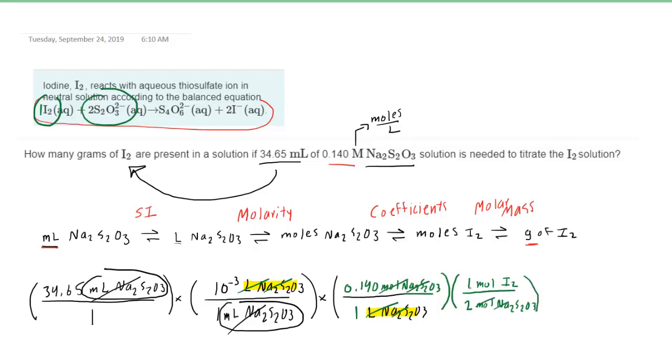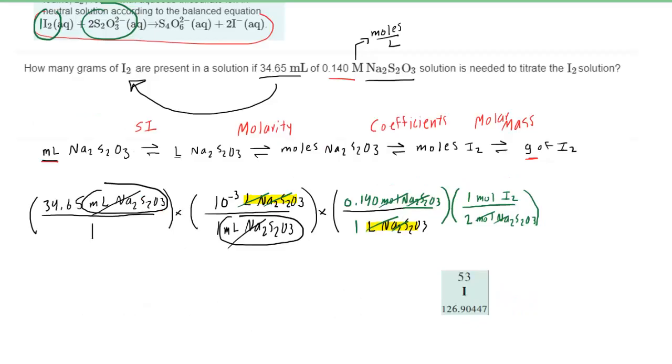And then we're one step away. We need to go from moles of iodine into grams. And for that, we'll use the molar mass. Let's grab a snapshot of the periodic table. We've taken iodine out of the periodic table here, and we can see that its molar mass is 126.9, roughly.